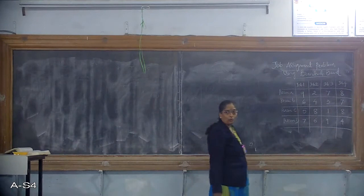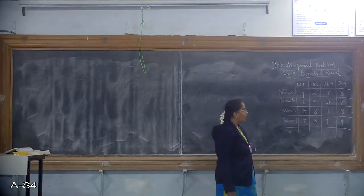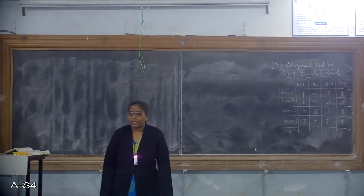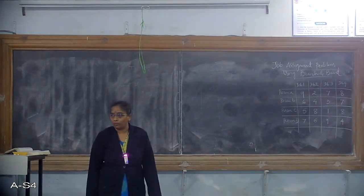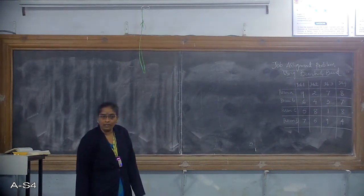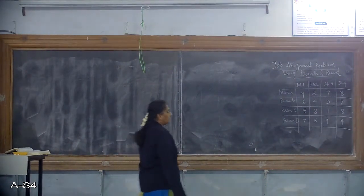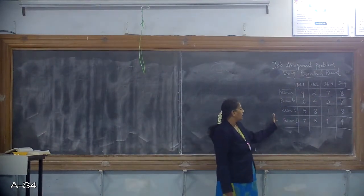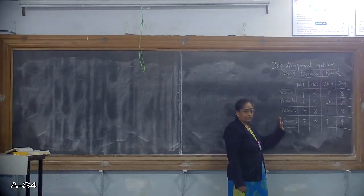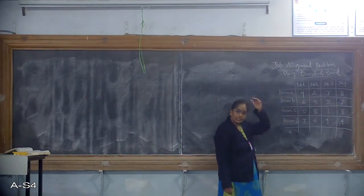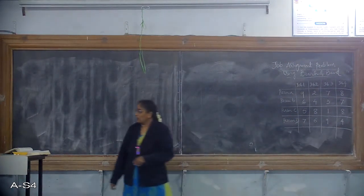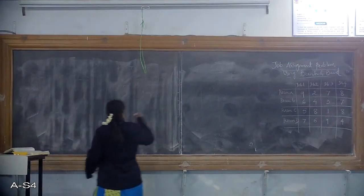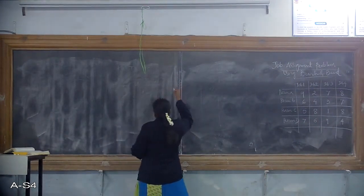In the previous class, for the knapsack problem, we calculated the upper bound. But here, since this is a minimization problem, we are going to calculate the lower bound value for each node in the state space tree. So we will start drawing the state space tree for this job assignment problem.